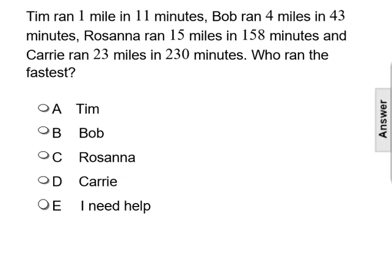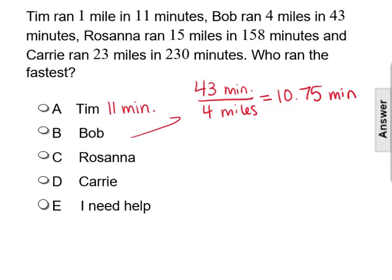So Tim, we're already told, ran the mile in 11 minutes. We then have Bob, who ran 4 miles in 43 minutes. So 43 minutes for 4 miles, if we divide, we'll get the unit rate, will give us 10.75 minutes. So that was for Bob. So already he's faster than Tim, because Tim took 11 minutes.